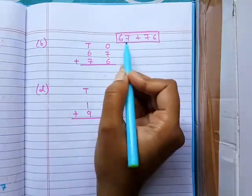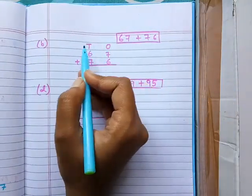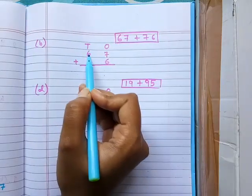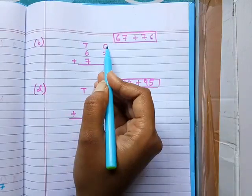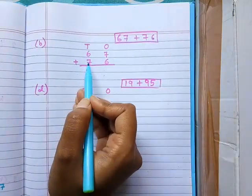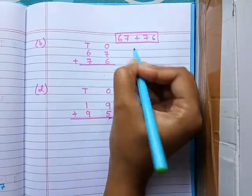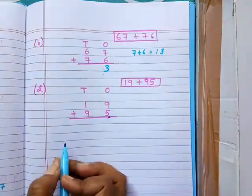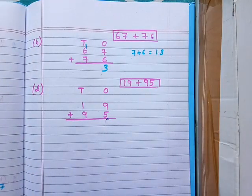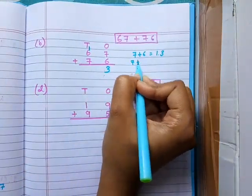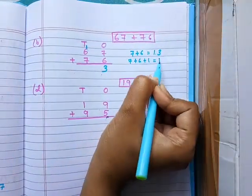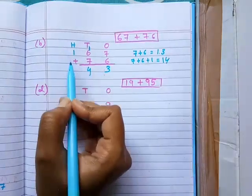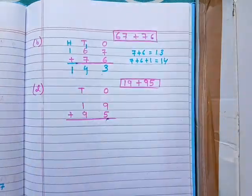Next question, question number b: 67 plus 76. First write down the place value chart — 1's place and 10's place. The 1's place digit is 7, write down 7; the 10's place digit is 6, write down 6. For the next number: 1's place digit is 6, write down 6; 10's place digit is 7, write down 7. Add the 1's place digits: 7 plus 6 equals 13. Write down 3 in 1's place and carry 1 to 10's place. Next add the 10's place digits: 7 plus 6 plus 1 equals 14. Write down 4 in 10's place and 1 in 100's place. So 143 is our answer.